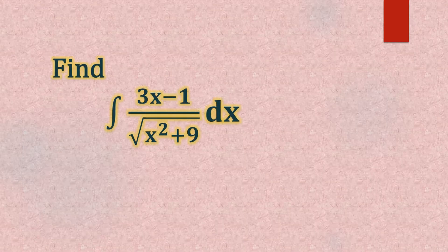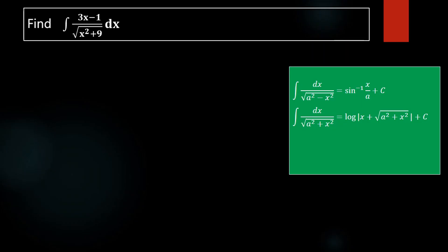Find the integral of (3x minus 1) divided by the square root of x squared plus 9. We have to find the value of this given integral utilizing two formulas for finding the value.